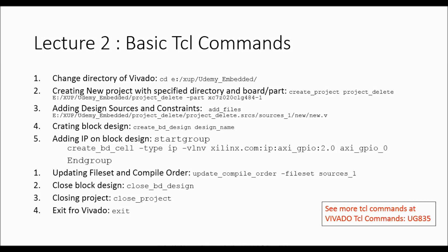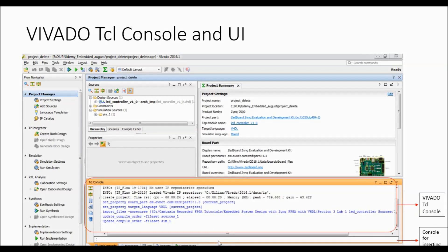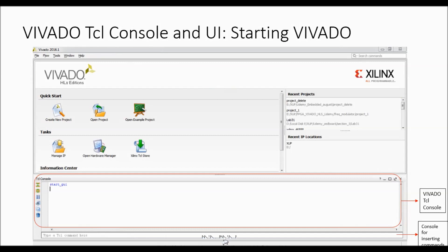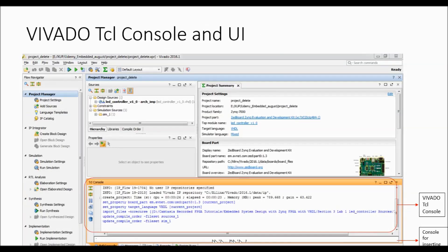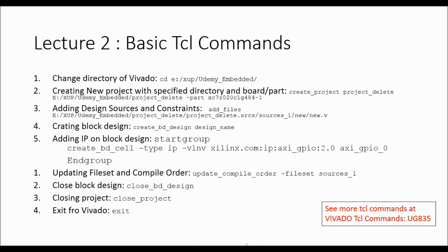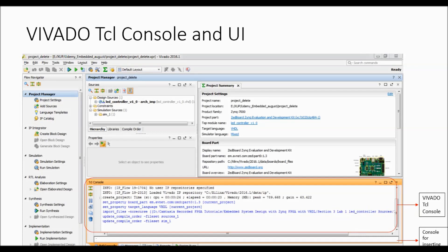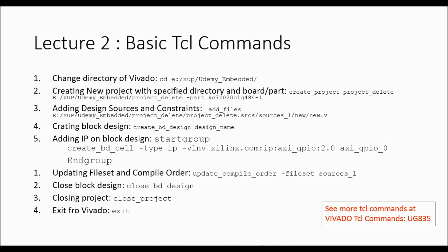To create a block design we use the command 'create_bd_design design_name'. If we run these commands on the Tcl console — where it says 'Type or paste Tcl commands here' — we can insert every command in that console and see the commands listed in blue format, with all comments shown in black font. For adding an IP to a block design, we use 'startgroup', then 'create_bd_cell -type ip ip_property' to add a Xilinx GPU IP, and then 'endgroup'.